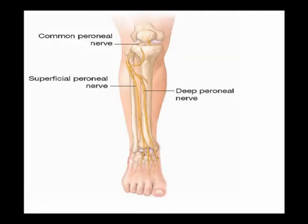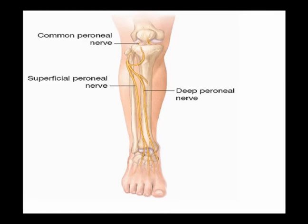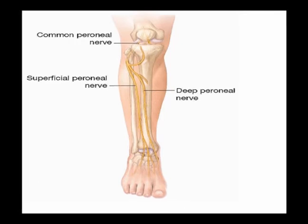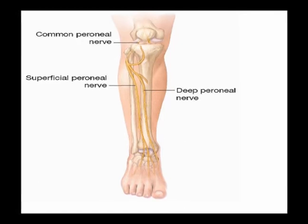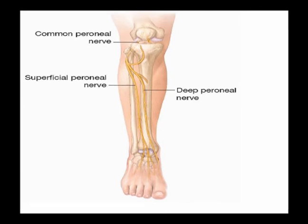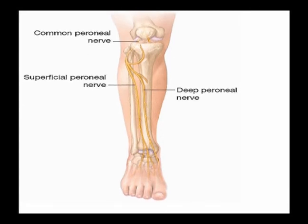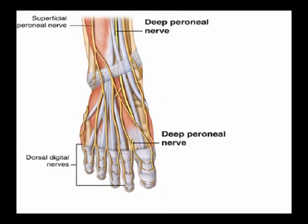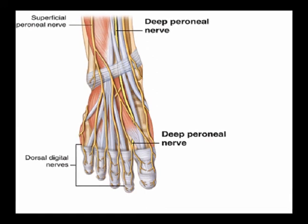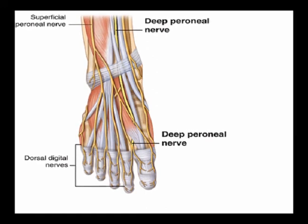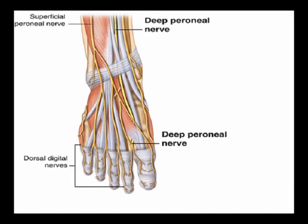The deep peroneal nerve descends lateral to the anterior tibial artery and is located just anterior to the interosseous membrane within the anterior compartment of the leg. Just superior to the ankle joint, the deep peroneal nerve divides into a lateral branch and a medial branch.